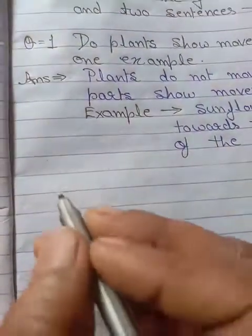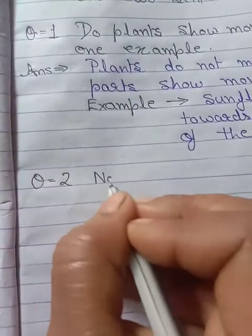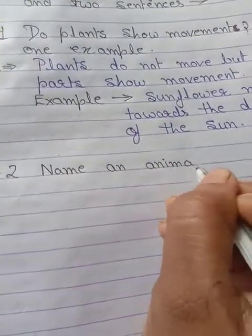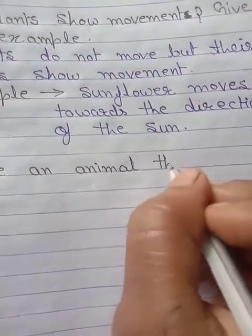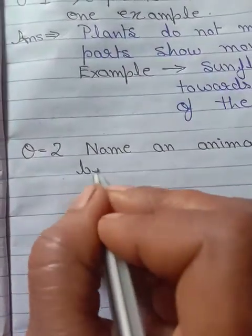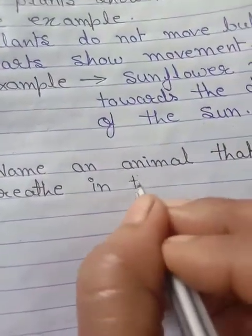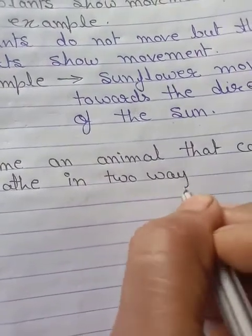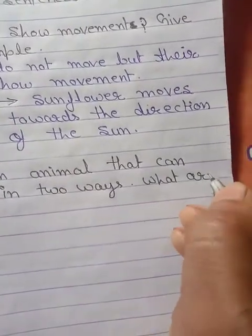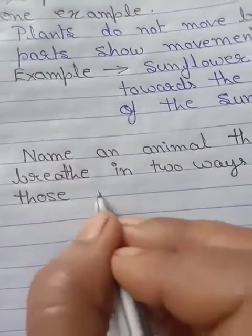Question number two: Name an animal that can breathe in two ways. What are those two ways?